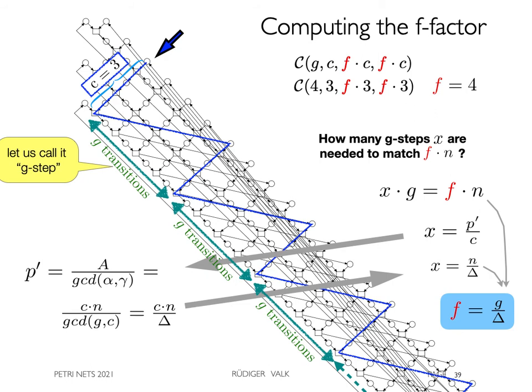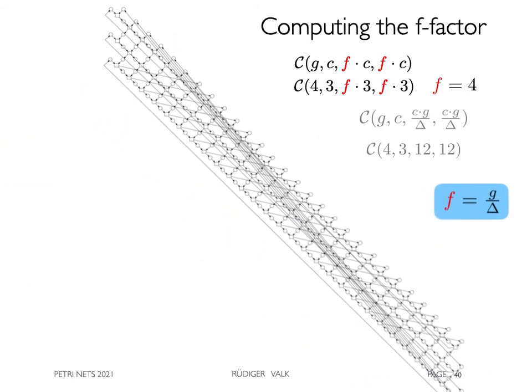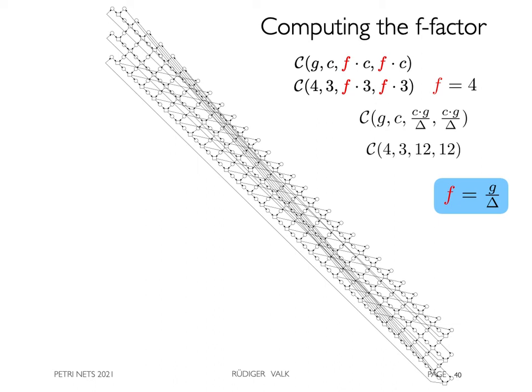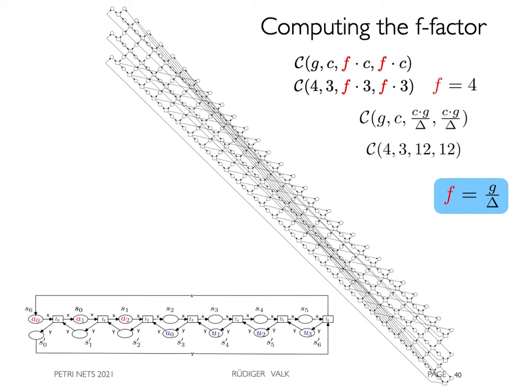With f equals 4, we obtain the cycloid 4-3-12-12, which is the T-unfolding of the colored nets for c equals 3 cars and g equals 4 co-cars.